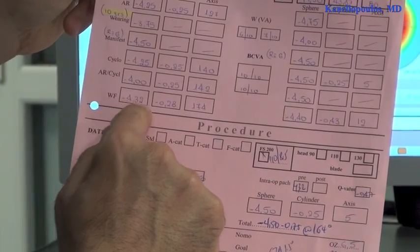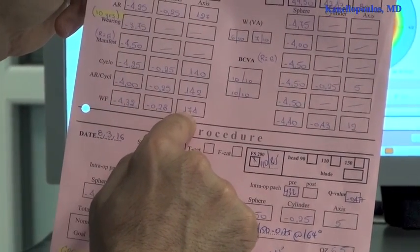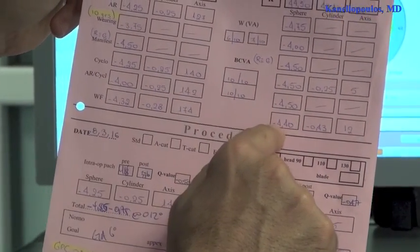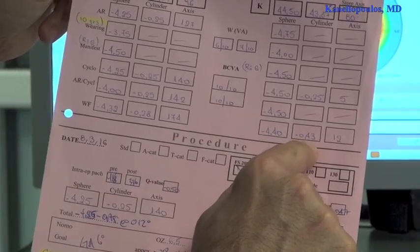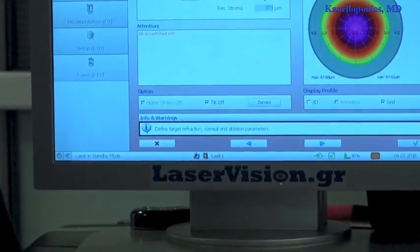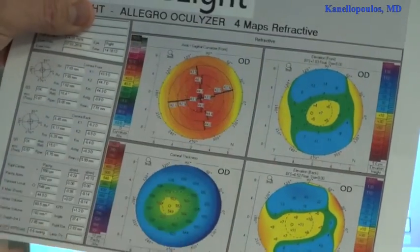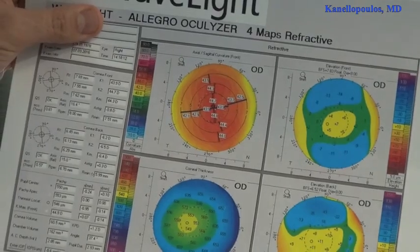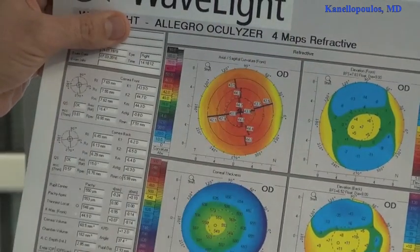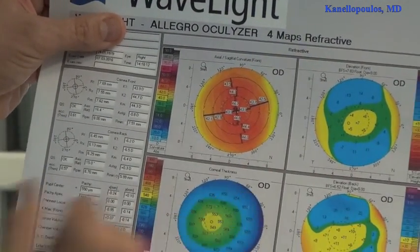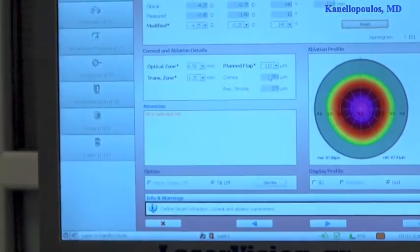Minus 4.32, minus 4.28 at 174. And minus 4.40, minus 0.43 at 12. Of course, repeatedly, we look at the pentacam maps, which show almost 0.8 diopters of astigmatism with the rule. And this is a normal cornea with thickness, minimal thickness, 550.